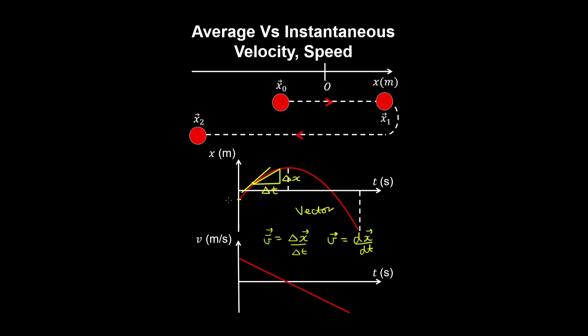So when the particle travels from x0 to x1, we can see that the velocity is positive. And at x1 the particle changes direction, so the velocity becomes zero, which is also the slope of the tangent to the position-time curve.